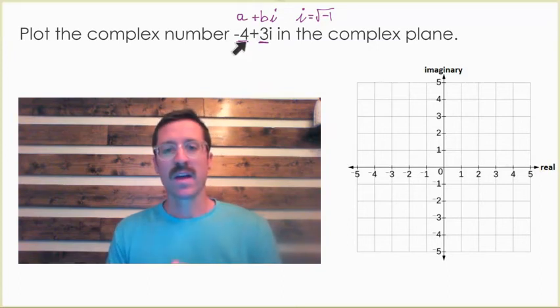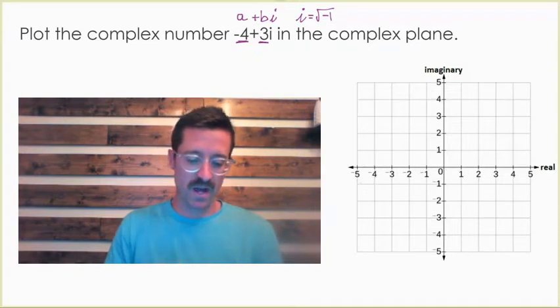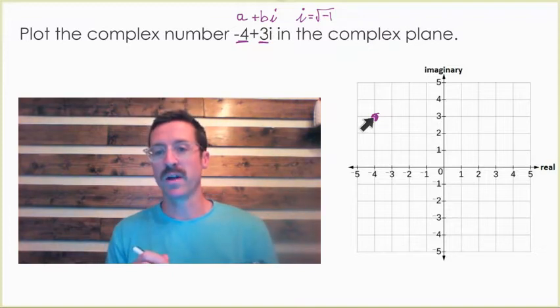And so if we look at this to graph -4+3i, negative four is our real value, so that means we move to the left four, and then three is our imaginary value, so that means we move up three because it's a positive three. To represent this value on the complex plane, we just put a point right there.